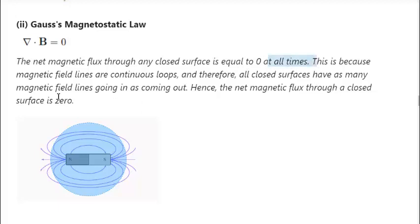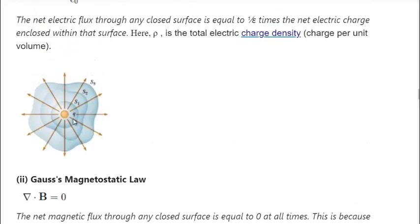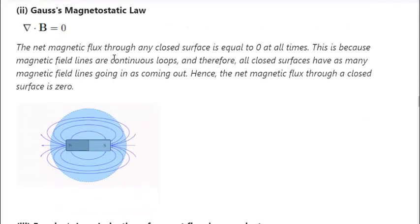This is because the magnetic field lines are continuous loops, and therefore all closed surfaces have as many magnetic field lines going in as coming out. Hence the net magnetic flux through any closed surface is zero — if one is coming out, one is going in. This is as opposed to the electric case, where field lines go out but don't come back in, depending on whether the charge is positive or negative. So the divergence of B equals zero — that's what this equation is saying.